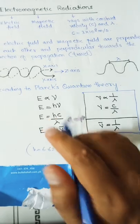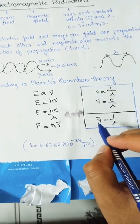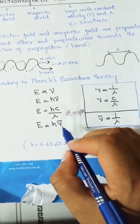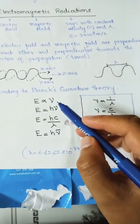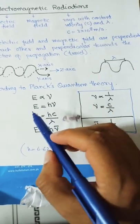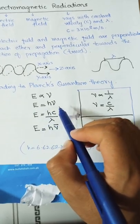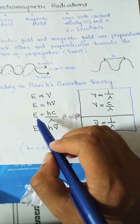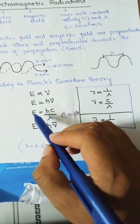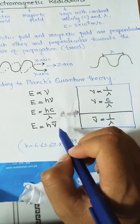We also write it as E = hν̄, because 1/λ = ν̄, and ν̄ is the wave number. So we can correlate different parameters: to relate energy with frequency, use E = hν; to relate energy with wavelength, use E = hc/λ; and to relate energy with wave number, use E = hν̄. All these equations are important in different contexts.